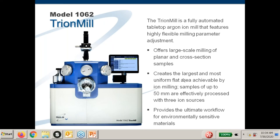This is the Model 1062 try-on mill. It is a fully automated tabletop argon ion milling system that features highly flexible milling parameter adjustment. It offers large-scale milling in both planar and cross-section samples, and creates the largest and most uniform flat area achievable by ion milling with samples up to 50 millimeters that are effectively processed, utilizing three ion sources. In addition to those characteristics, it provides the ultimate workflow for environmentally sensitive materials.